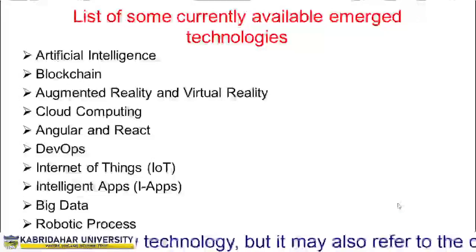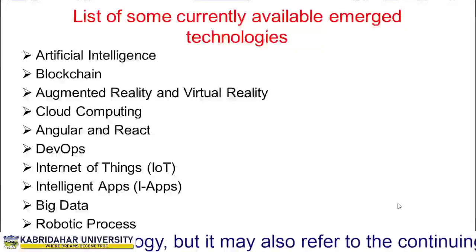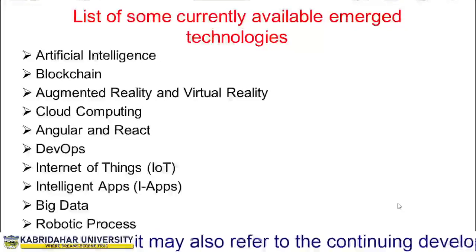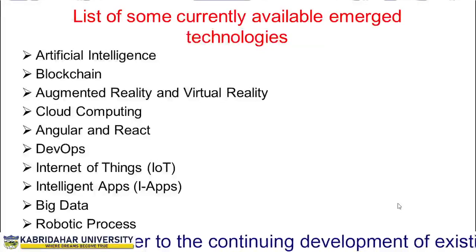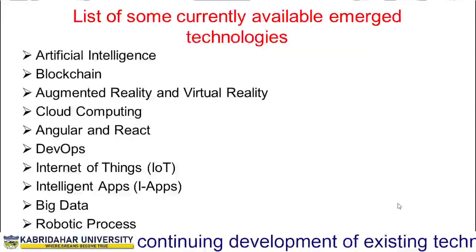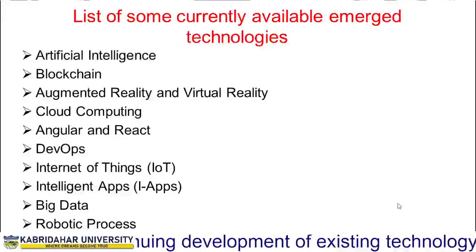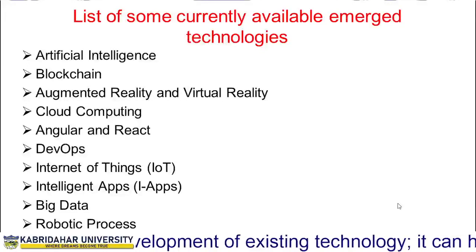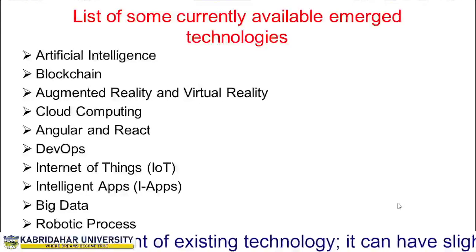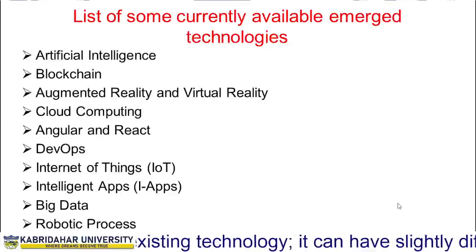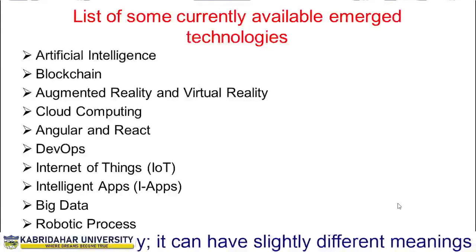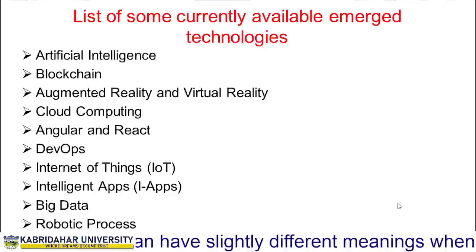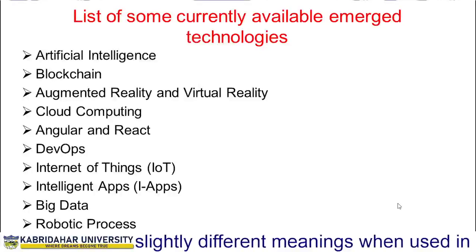When we come to the fourth slide, it lists some currently available emerging technologies. This list includes artificial intelligence, blockchain, augmented reality, and virtual reality, as well as cloud computing, Angular and React, DevOps, and Internet of Things or IoT, as well as intelligent apps or iApps, big data, and robotic process automation or RPA.